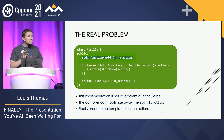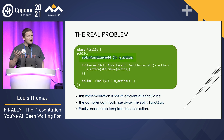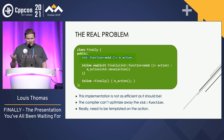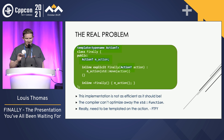The real problem with this code is that it's not as efficient as it could be. The compiler cannot optimize away the std::function state, so what we really need to do is to template on the action. So let's fix that.